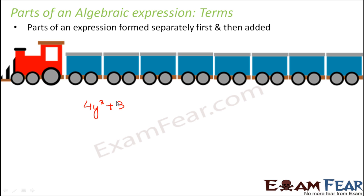Now, when I talk about the terms of this algebraic expression, you see what are the compartments of the train? One compartment is 4y³, the other compartment is 3. So these two compartments are joined together to form 4y³ plus 3. We can say that 4y³ is a term. Similarly, 3 is another term. So this algebraic expression has two terms.